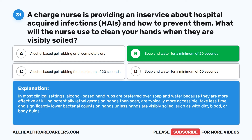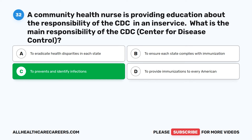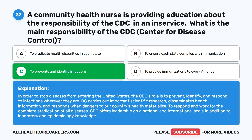Question 32. A community health nurse is providing education about the responsibility of the CDC. What is the main responsibility of the CDC, Centers for Disease Control? A. To eradicate health disparities in each state. B. To ensure each state complies with immunization. C. To prevent and identify infections. D. To provide immunizations to every American. The correct answer is C: To prevent and identify infections. The CDC's role is to prevent, identify, and respond to infections wherever they are in order to stop diseases from entering the United States. The CDC carries out important scientific research, disseminates health information, and responds when dangers to our country's health materialize, offering leadership on a national and international scale along with laboratory and epidemiology knowledge.